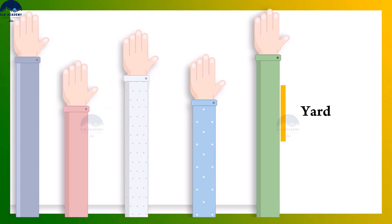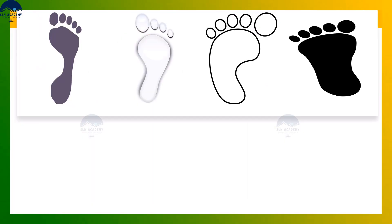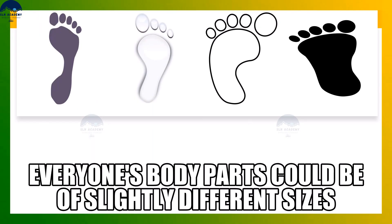People measured a yard of cloth by the distance between the end of the unstretched arm and their chin. However, everybody's body parts could be of slightly different sizes and this caused confusion in measurement.